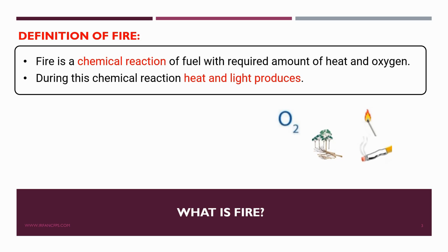In our terminology, for fire to occur, three key elements need to be present: number one, oxygen; number two, heat; and number three, fuel. When these three elements combine under the right conditions, they produce heat and light, and that's what we see as fire.